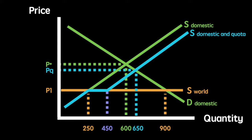I'll now mark in red the quantity supplied domestically and mark in blue the quantity supplied by foreign firms. The initial 250 units below price P1 are supplied domestically, then 200 units of imports are provided at P1, beyond which an additional 200 units are provided by domestic suppliers.